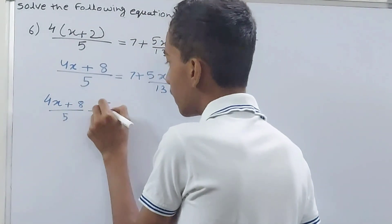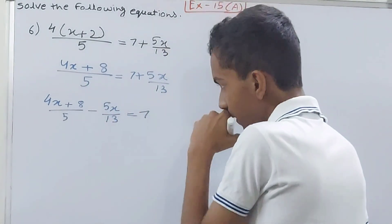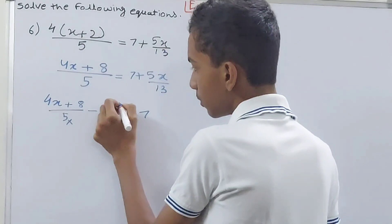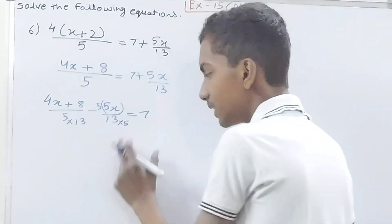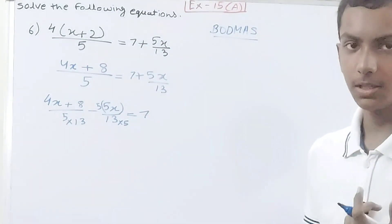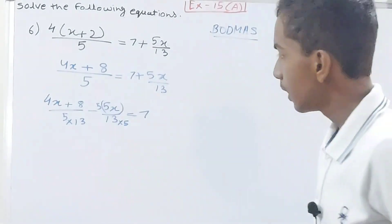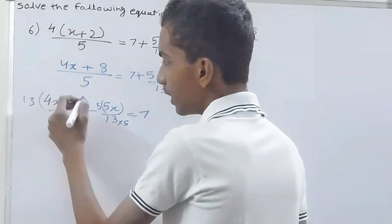See, 5 and 13 LCM becomes... sorry, LCM is 65, not 5. 65 because 13 times 5 is 65, and 5 times 13 is also 65. So 5 into 13, so here also into 13.